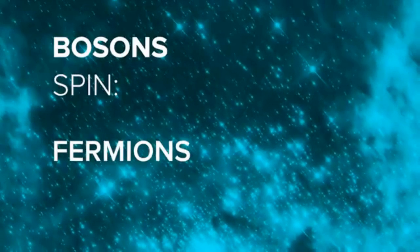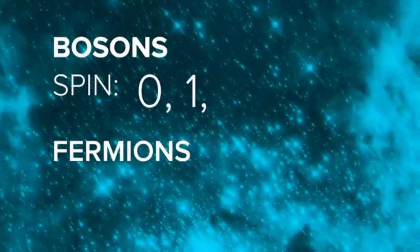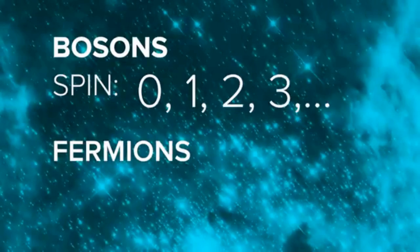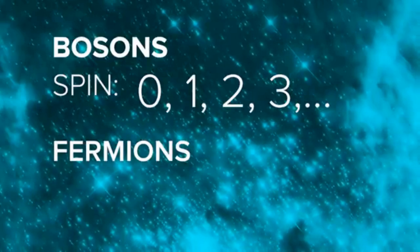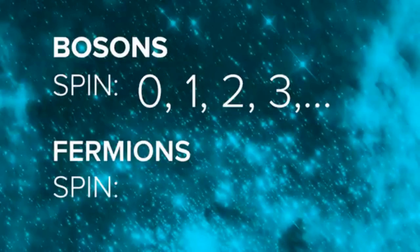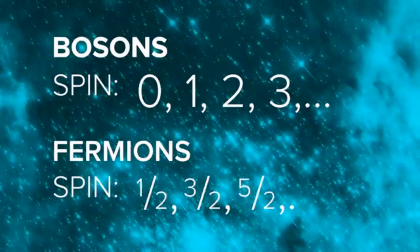In quantum mechanics we find two types of particles, they are called bosons and fermions. While bosons have an integral spin, fermions have a non-integral spin.